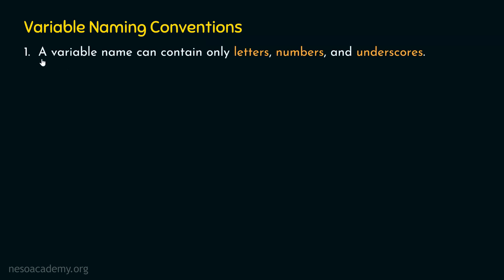The first rule is: a variable name can contain only letters, numbers, and underscores. We can name variables using letters, numbers, and underscores, but we are not allowed to use any special character like at-the-rate, hash, dollar, percent, or ampersand.